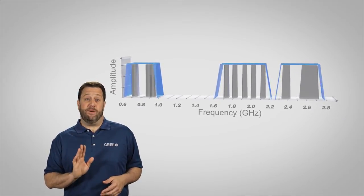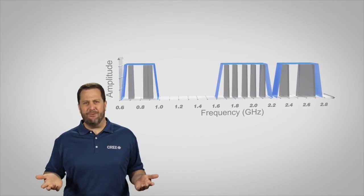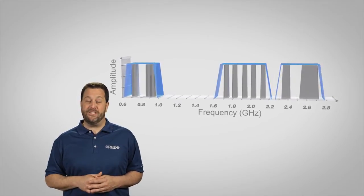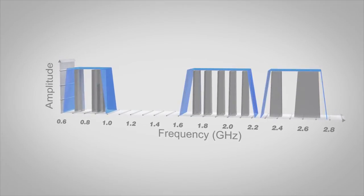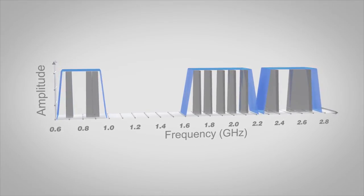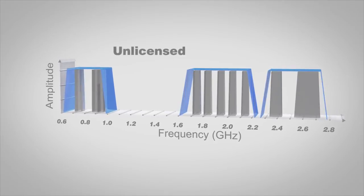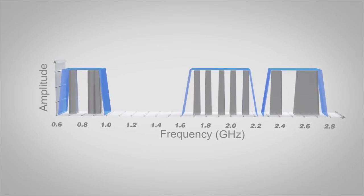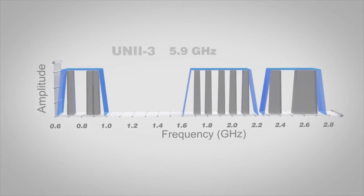Now compare the frequency bandwidths achieved by Cree's GaN-based amplifiers in blue. It's not rocket science to see that the industry has to go GaN, because a great user experience just cannot be achieved any other way. This chart shows popular existing cellular bands. GaN amplifiers are also currently available from Cree for the WiMAX and LTE bands at 3.5 GHz, as well as for the unlicensed spectrum at 5 GHz. We also have a single GaN amplifier that can cover public safety frequencies at 4.9 GHz as well as the UNII-3 5.9 GHz frequency.